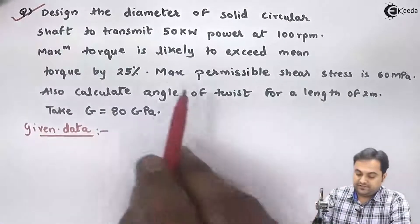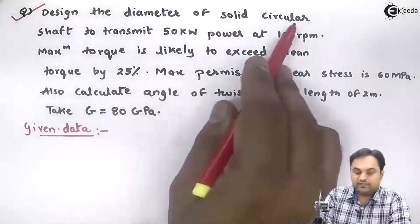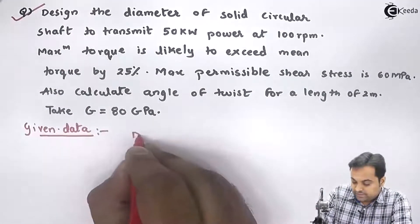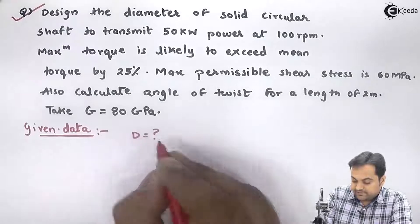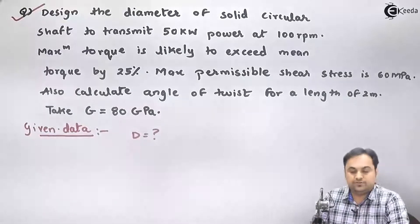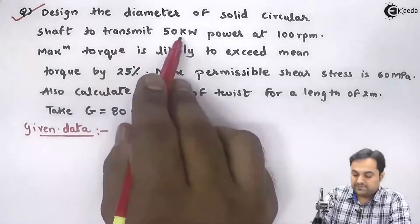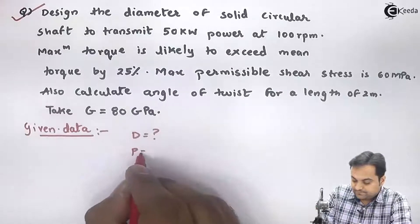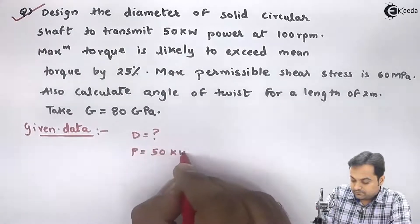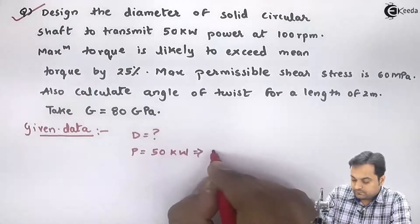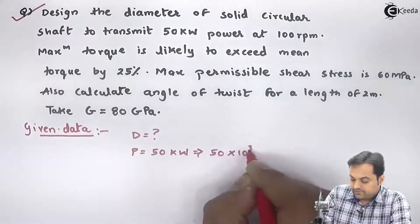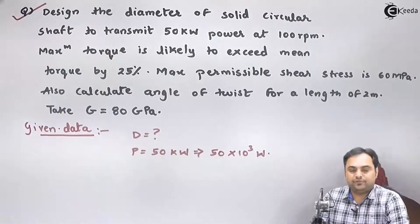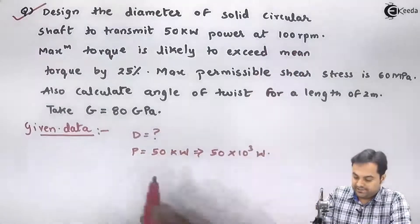We have to design the diameter D of a solid circular shaft to transmit 50 kilowatts power. Power is given as 50 into 10 raised to 3 watts, at 100 rpm.